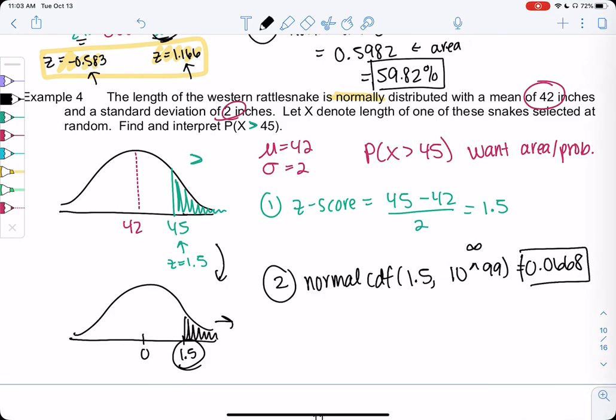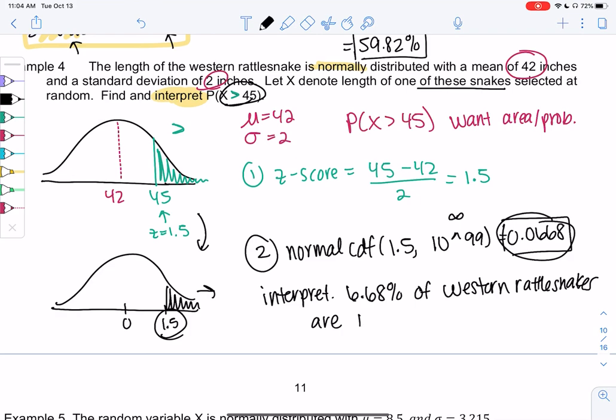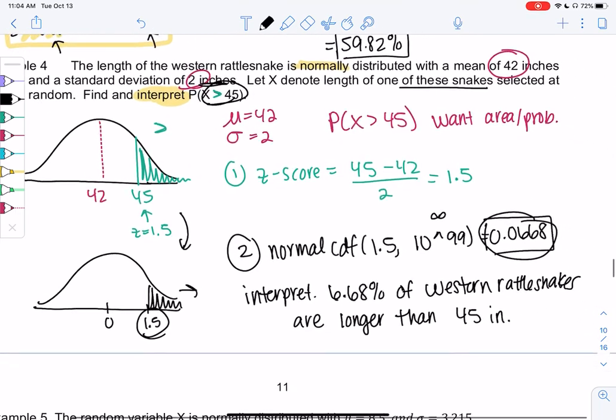Let's try to interpret it. Interpret means write a sentence, a sentence that anyone can understand, even someone who's not in stats class. So this tells us 6.68% from the probability. And then what are we talking about? We're talking about rattlesnakes. So 6.68% of these Western rattlesnakes are longer than 45 inches. Longer for the greater than symbol, 45 inches, because everything was in inches. And that is how you would interpret.